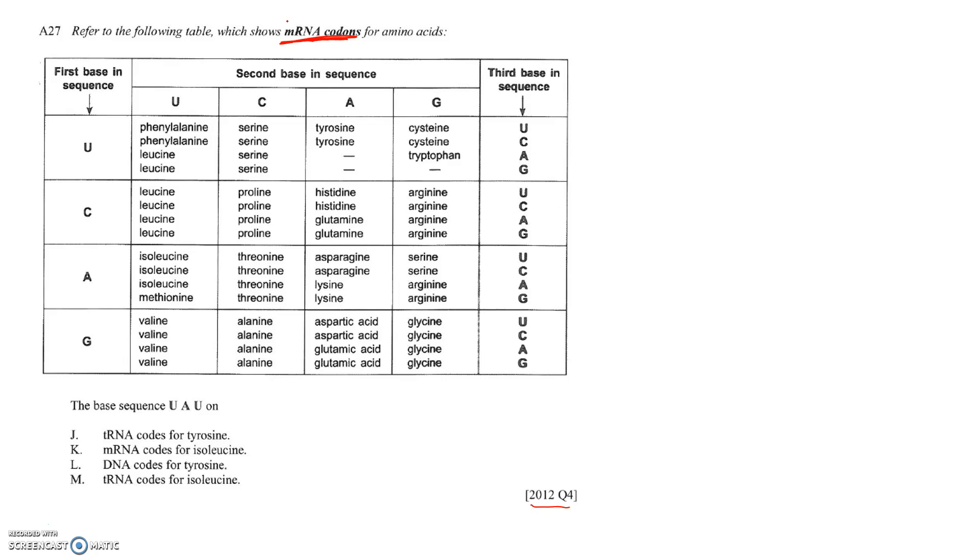We've got a question here where we have to line up two things. We need to work out what type of base sequence it is: tRNA, mRNA, DNA or tRNA, and what it's coding for with two options there: tyrosine or isoleucine.